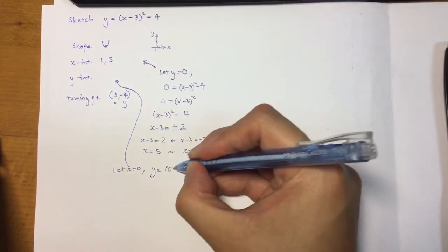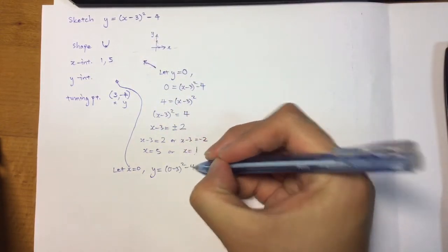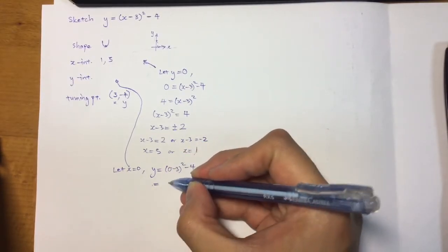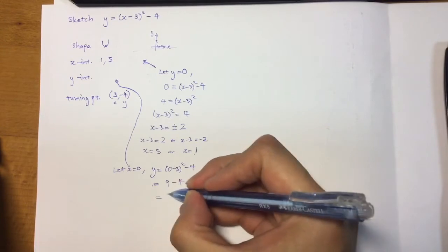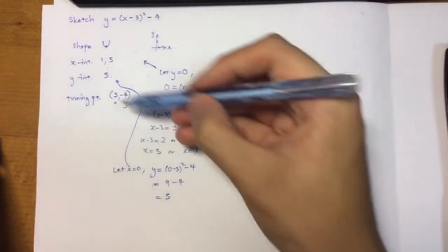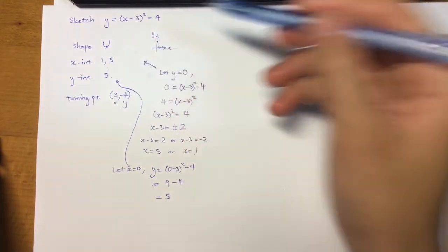Okay. So when I have x be 0, I have this. I'll have minus 3 squared gives me 9, minus 4. So I have 5. So now I have all the values that I need to do my sketch.